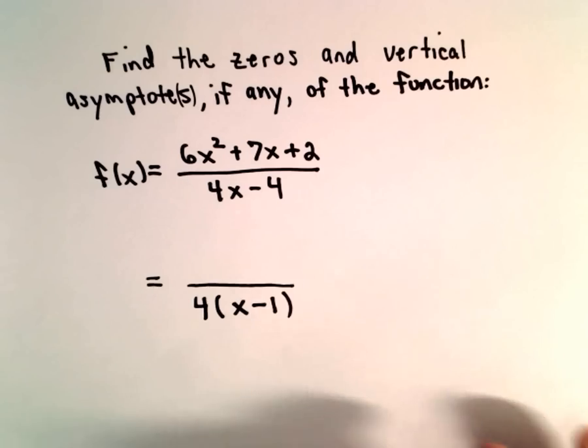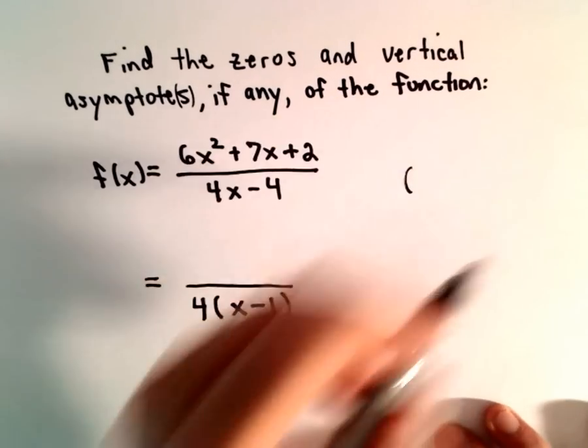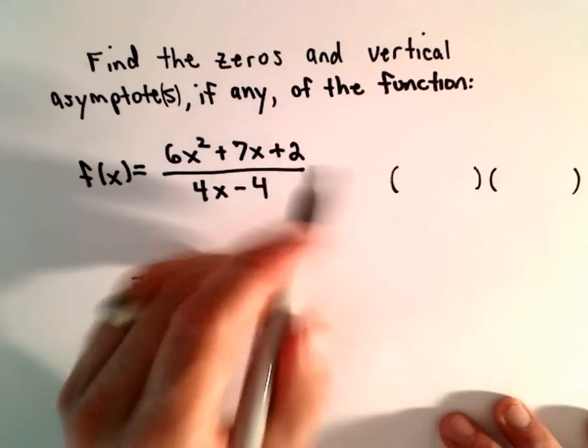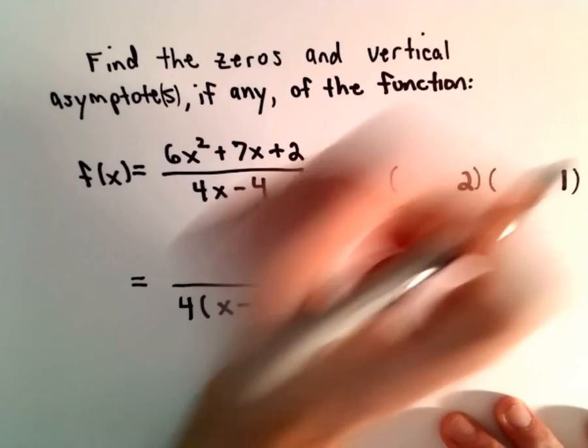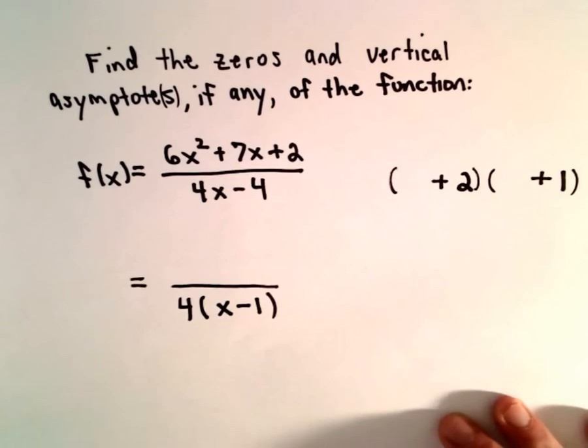The numerator is a little trickier because there are different ways that might factor. To get a positive 2, I'm going to need a 2 and a 1. Since the sign in the middle is positive, that's going to make both of them positive.